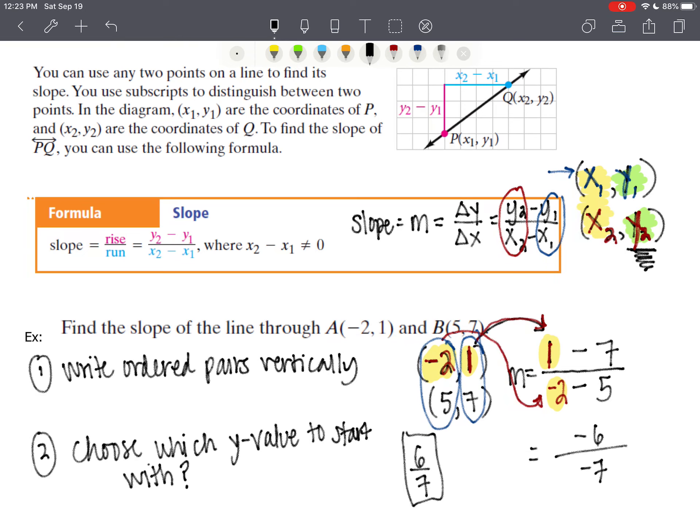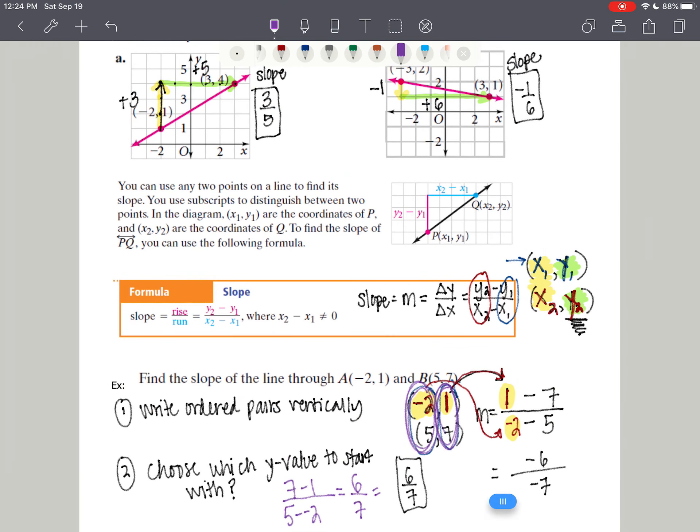And that's exactly why I just did what I did, so that I can show you that when you have a negative over a negative, it does become a positive. Now let's say that someone was working ahead and they said, hey, wait a second, I started with 7. So if you start with 7 and you do 7 minus 1, then you would do 5 minus negative 2. And that is also 6 over 7, which is the same as 6 over 7, which is what we found.